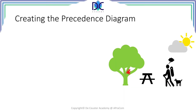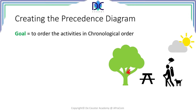When we create the precedence diagram we have to follow certain principles. The goal is to order all these activities in a chronological order — an order that we can execute without problems.